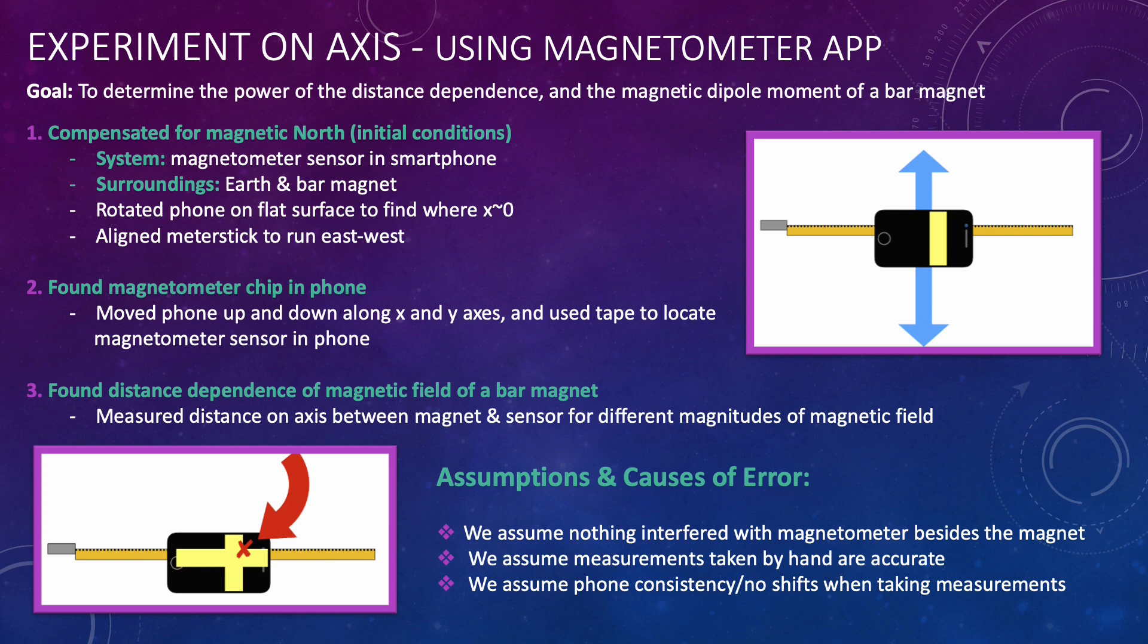We assume here that nothing interfered with the magnetometer besides the magnet, that my distance measurements are accurate, and that there were no shifts in my phone position while taking the measurements.